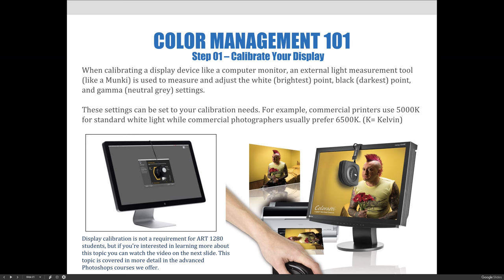When calibrating a display like a computer monitor, an external light measurement tool should be used, like the color monkey shown in the slide. This is used to measure and adjust the white or brightest point, the black or darkest point, and the gamma or neutral gray settings. For example, commercial printers like to use 5000 Kelvin for standard white light, and commercial photographers usually prefer 6500 Kelvin. Display calibration is not a requirement for Art1280 students, but if you're interested in learning more about the topic, you can watch the video on the next slide.